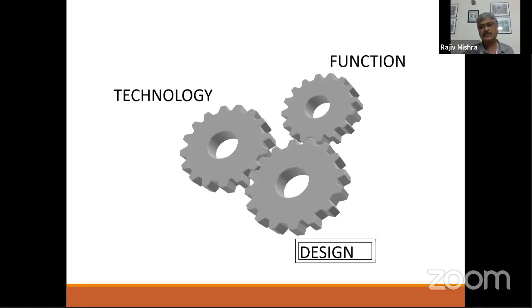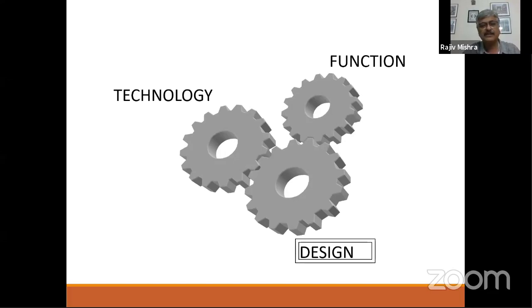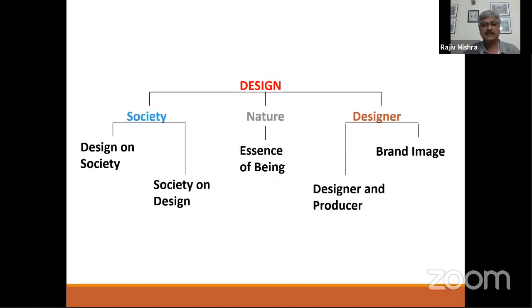These three factors — design, function, and technology — cannot live without each other. If you think design can be done without understanding function and technology, you cannot design. A few years ago, washing machines looked like industrial products because they were designed by manufacturing companies purely to deliver the function of washing clothes. But when washing machines were designed for people, they decided to do them better. We will look at design as a subject, its impact on society, the designer's role in creating a brand image, and what happens to the producer who manufactures all designed products.